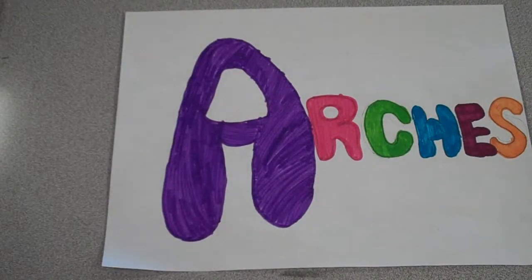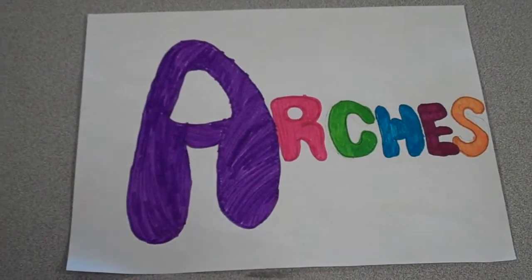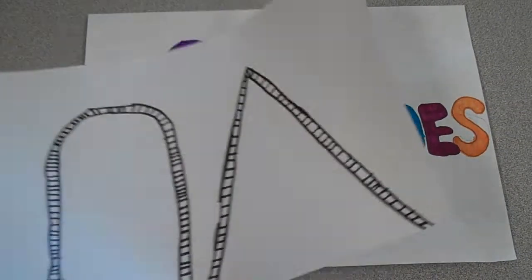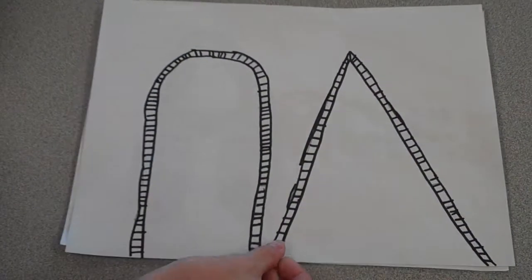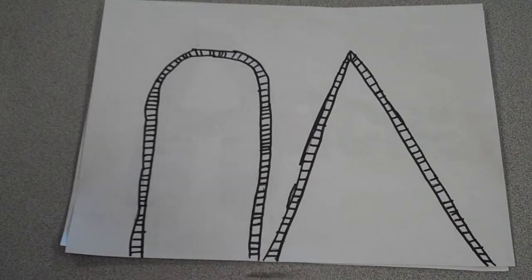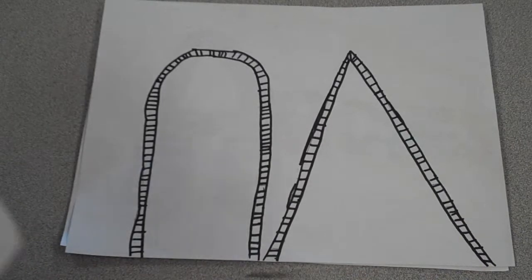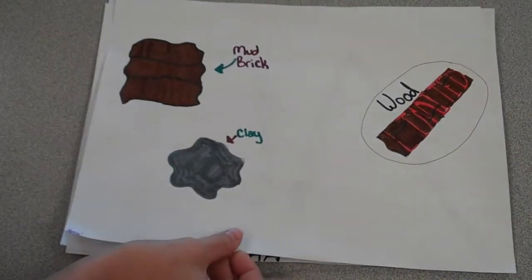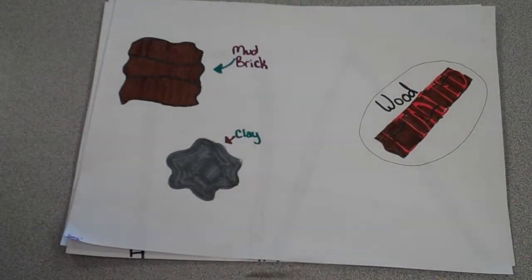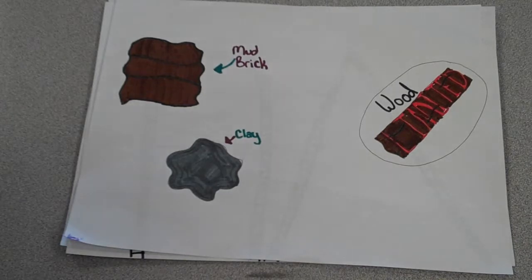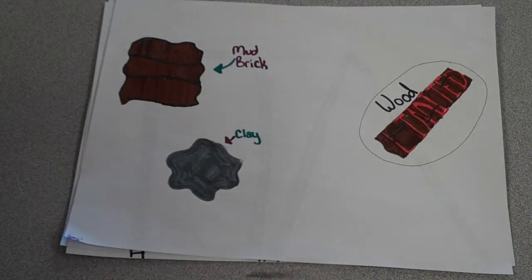Arches are an upside down V or U shaped structure. They are made of mud bricks or clay because their wood was limited and they had no stone.